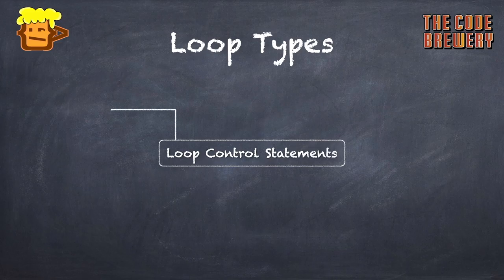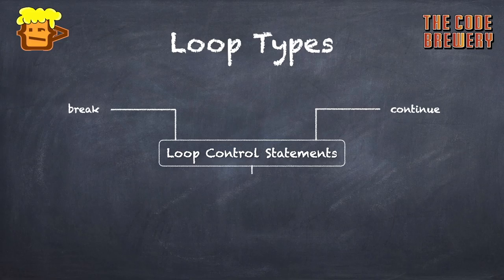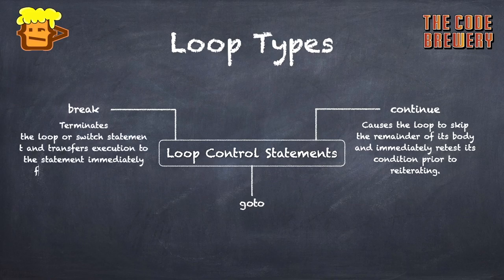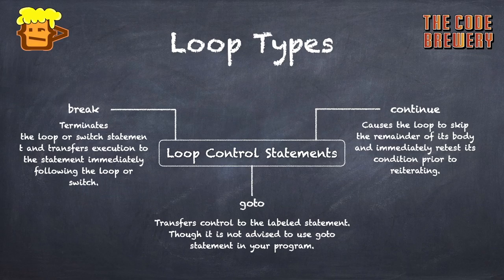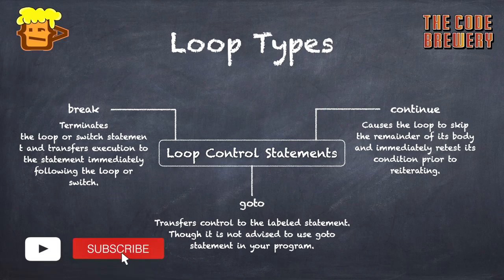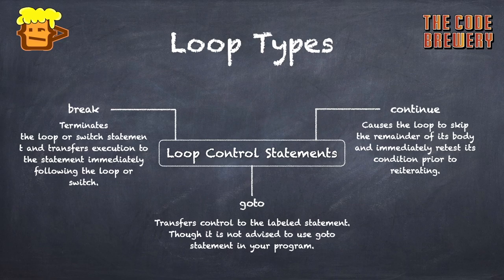Another section in loop types is loop control statements — statements that can control the flow of a loop. These are: break, continue, and goto. Continue causes the loop to skip the remainder of its body and immediately retest its condition before re-iterating. Break terminates the loop or switch statement and transfers execution to the statement immediately following. Goto transfers control to a labeled statement, though it is highly discouraged to use goto in your program.